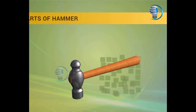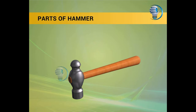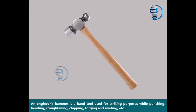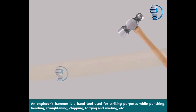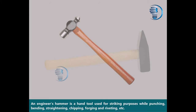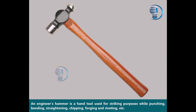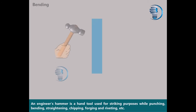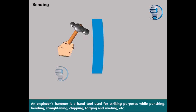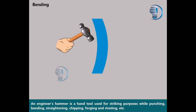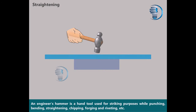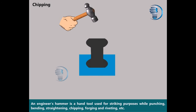Parts of hammer. An engineer's hammer is a hand tool used for striking purposes while punching, bending, straightening, chipping, forging, and riveting etc.